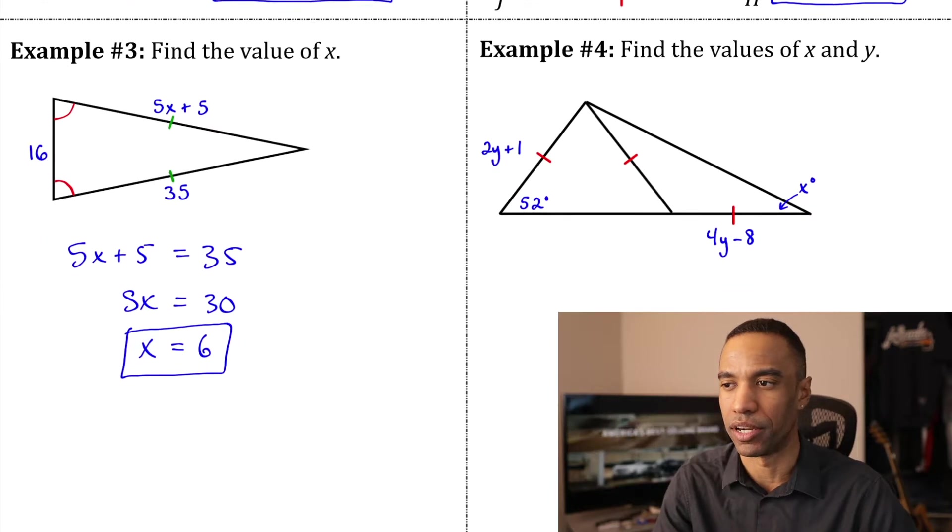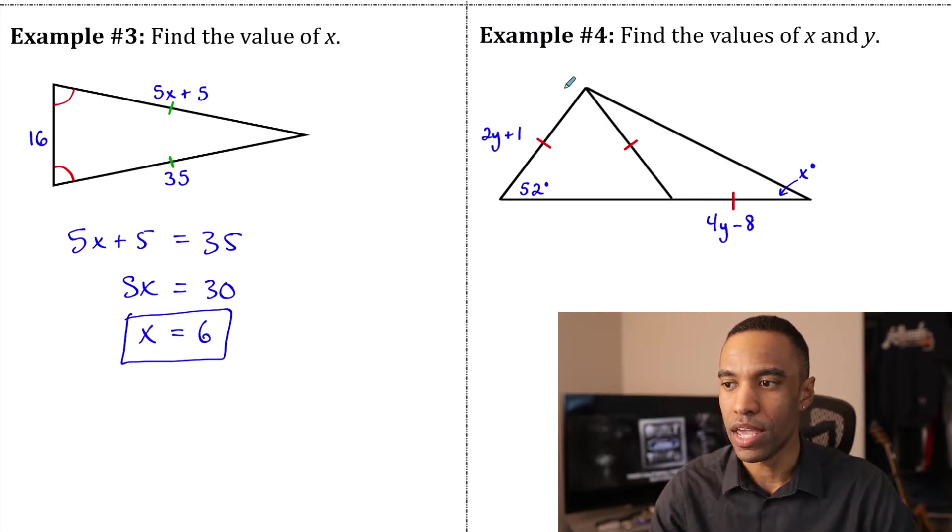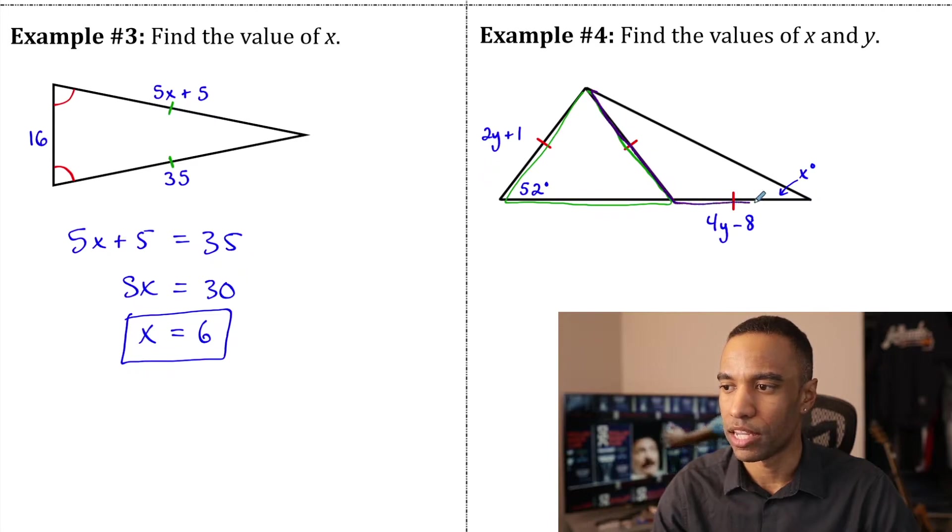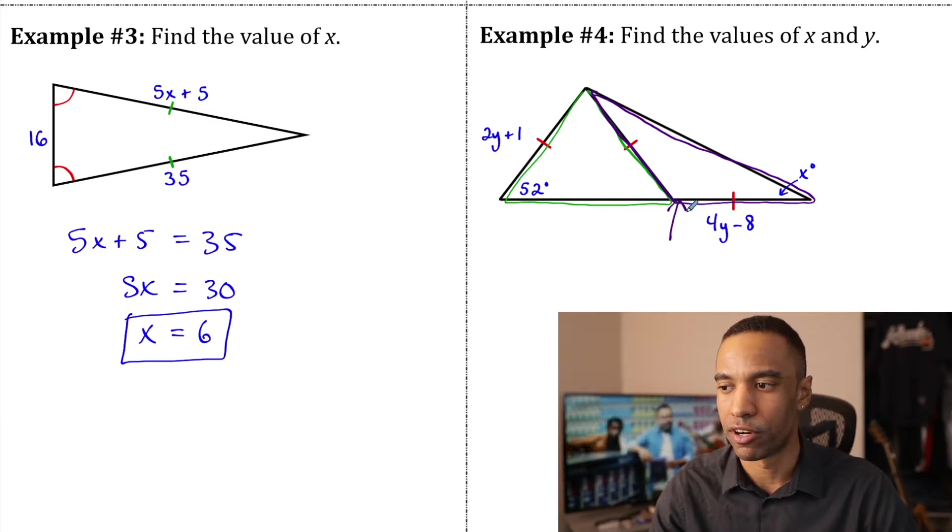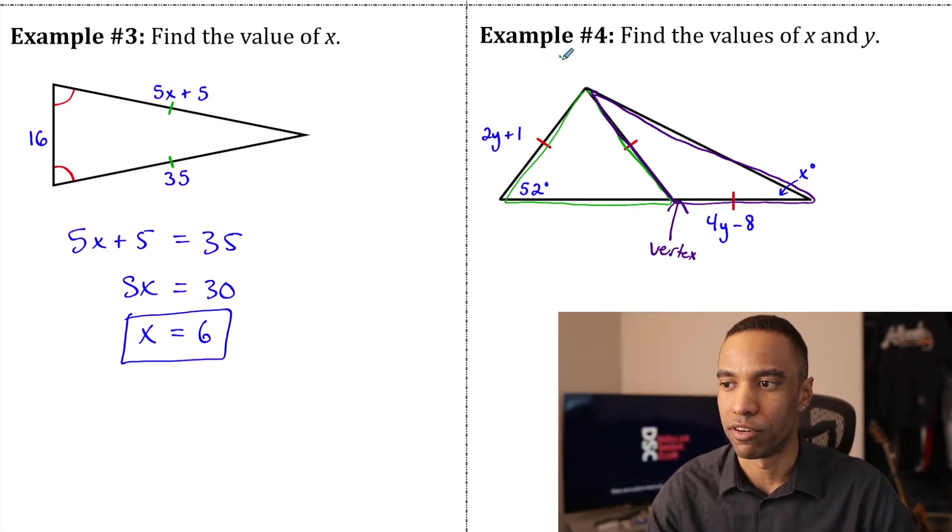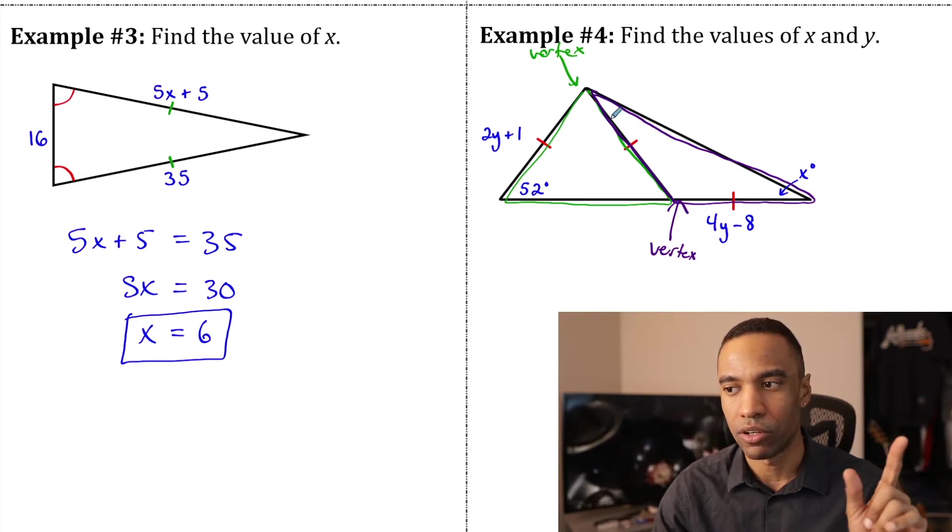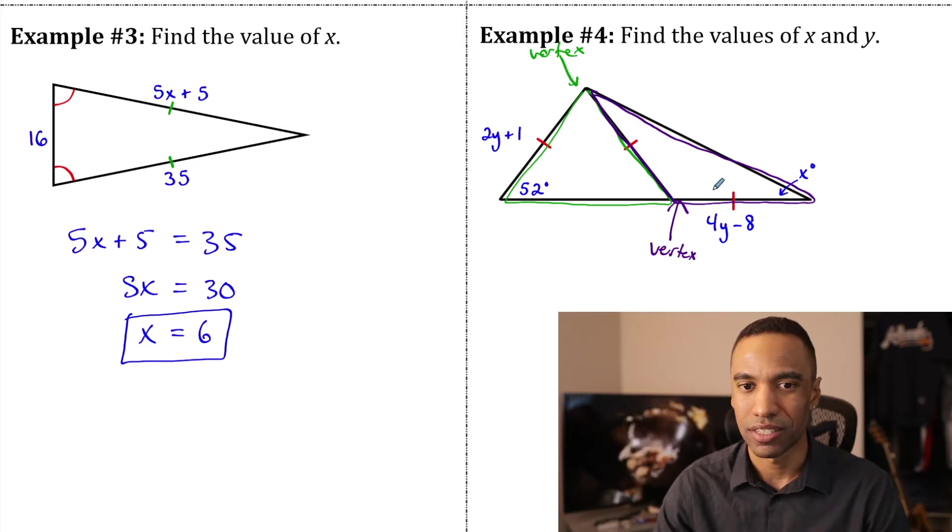And the final example here. Find the values of X and Y. Look at this shape. Well, what you do have within here, if you really look at the tick marks, we have an isosceles triangle right here in green. And then we have an isosceles triangle right here in purple, if you can see and understand that this one's just tipped over where this is the vertex angle right here. And then this one's the vertex angle right here. I'm going to erase all this, but just kind of keep that in mind.